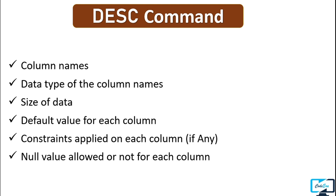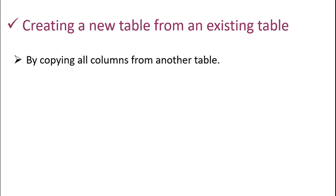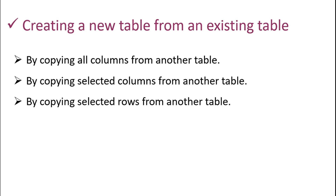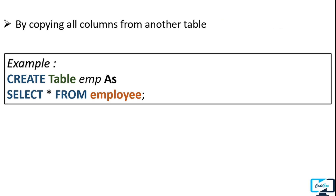We can also create a table from another existing table in three ways: by copying all columns, by copying selected columns, or by copying selected rows. For the first way — copying all columns — we use the SELECT command. The query is: CREATE TABLE emp AS SELECT * FROM employee. This creates a new table named emp that is an exact copy of the employee table, fetching all data and structure using the SELECT statement.